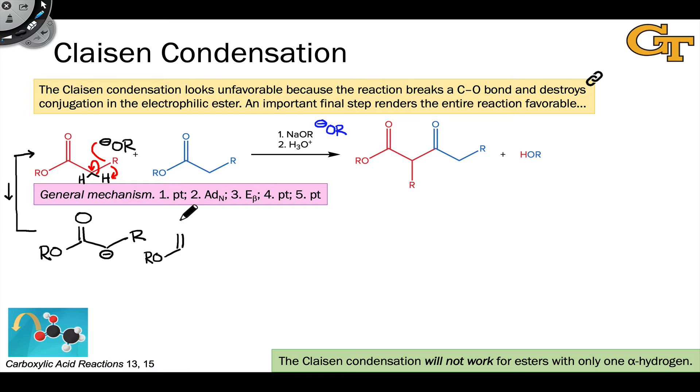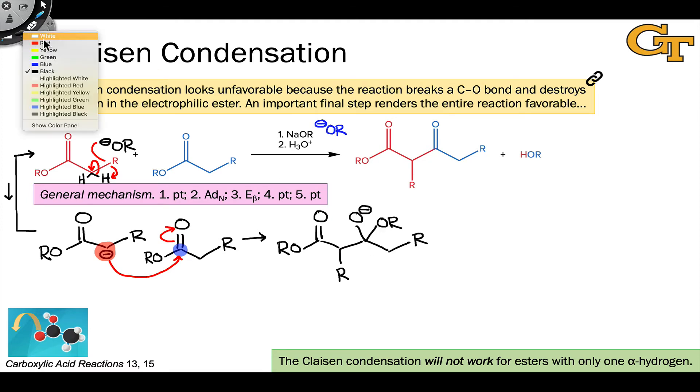In the next step, the enolate engages with the electrophilic ester molecule in a nucleophilic addition step. This is the first step of the nucleophilic acyl substitution process. The resulting intermediate contains an anionic oxygen positioned adjacent to a carbon-oxygen bond and an alkoxy group that can potentially serve as a leaving group. With the negatively charged oxygen adjacent to the OR group, we have the potential for beta elimination, and beta elimination occurs to give a beta-keto ester.